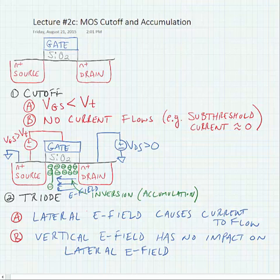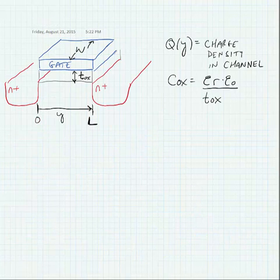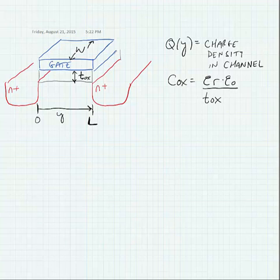So, let's look at the actual analysis. Okay, so here is a picture of our transistor. And we're going to start first by estimating the charge density in the channel. Which we're going to call Q of Y.